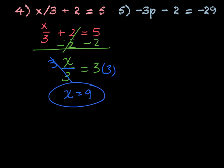Next, we have negative 3p minus 2 equals negative 29. First, get rid of the minus 2. The opposite of minus is plus, so add 2 to both sides. This gives negative 3p equals negative 29 plus 2, which is negative 27.